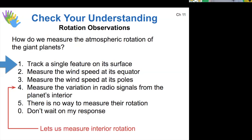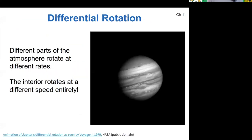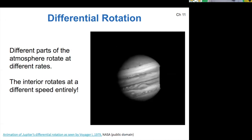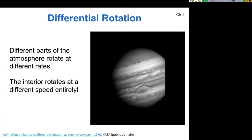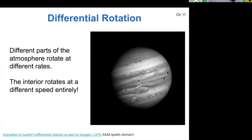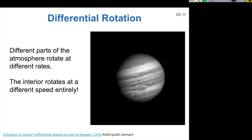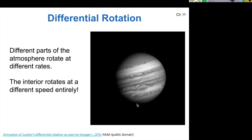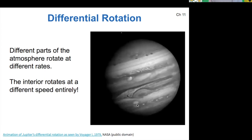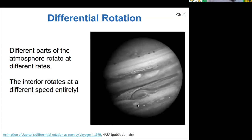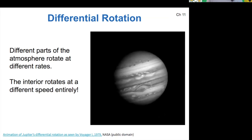On Earth, the rotation of the surface is the same as the rotation of the interior because it's a solid body. But on the gas giants, that's not the case — different parts of the atmosphere rotate at different rates, and the interior rotates at a different speed entirely. In Jupiter's zonal flow pattern, not only do different bands move at different speeds, they're actually moving in different directions. The Great Red Spot is a cyclone, and some of the small ovals are also thought to be cyclones or anticyclones depending on their direction.